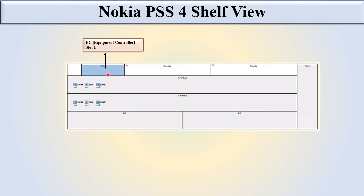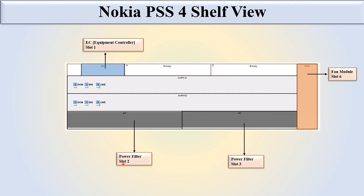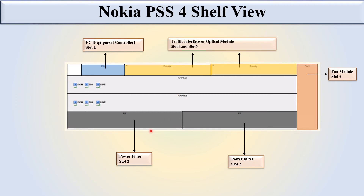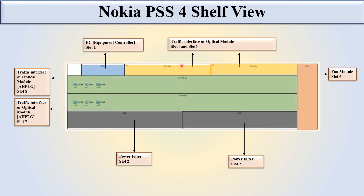You can see here slot 1 is fixed for the equipment controller, slot 6 is fixed for the fan module, slot 2 and slot 3 are fixed for the power filter module or power card, slots 5 and 4 are fixed for the traffic interface or optical module, and slot 7 and slot 8 are also used for the traffic interface or optical module.